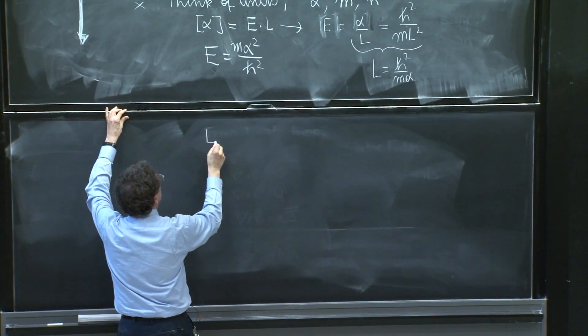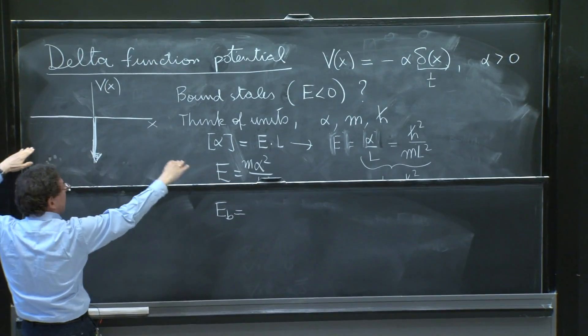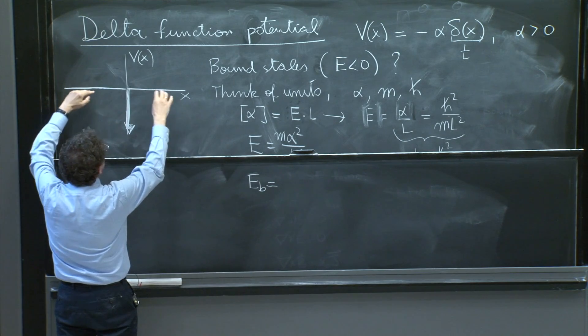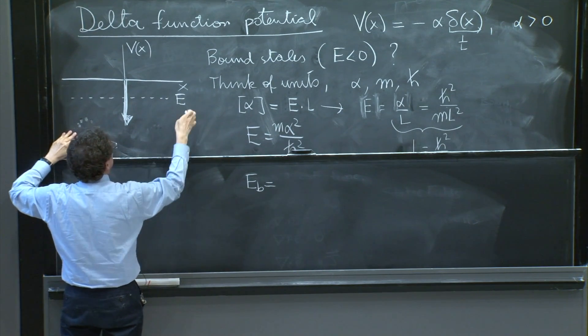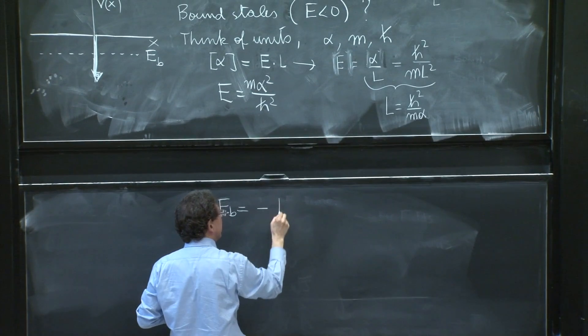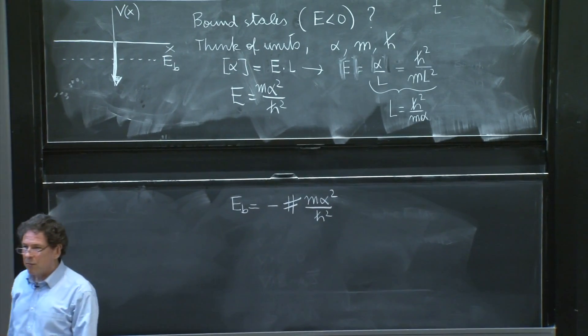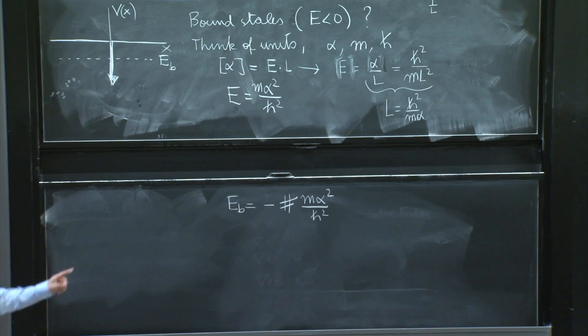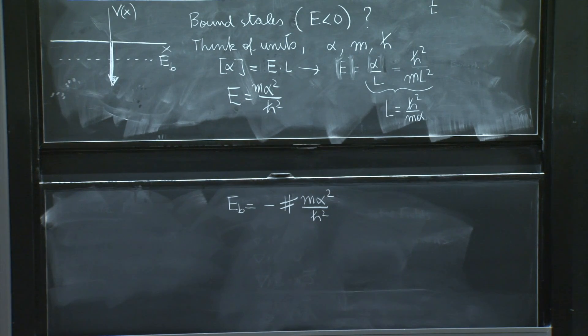If this has units of energy, the bound state energy, now if you have a bound state here, it has to decay in order to be normalizable. So the energy, as we said, is negative energy of a bound state if it exists. And this bound state energy would have to be negative some number times mα²/ℏ². And that's very useful information. The whole problem has been reduced to calculating a number. It better be. And the answer cannot be any other way. There's no other way to get the units of energy. So if a bound state exists, it has to be that.